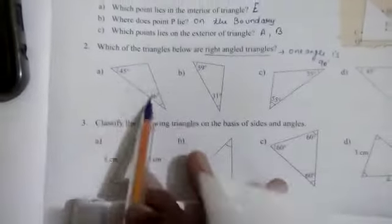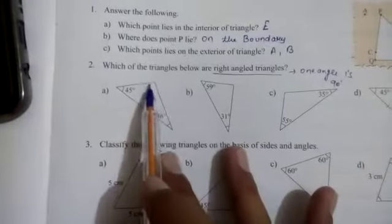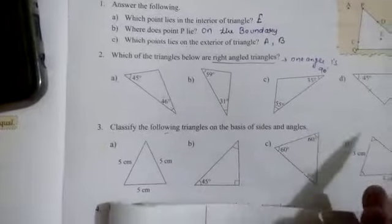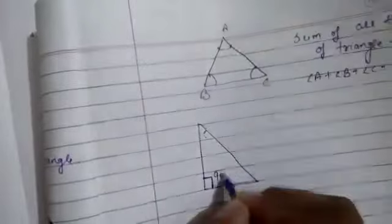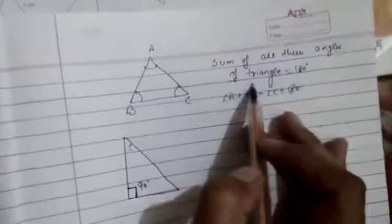So for triangle ABC, angle A plus angle B plus angle C equals 180 degrees. If two angles are given, we can find the third. If any of the three angles is 90 degrees, then that triangle is a right-angled triangle. From the figure, we can't tell just by looking — unless this symbol for 90 degrees is shown. Since no such symbol is given, we check by calculation.